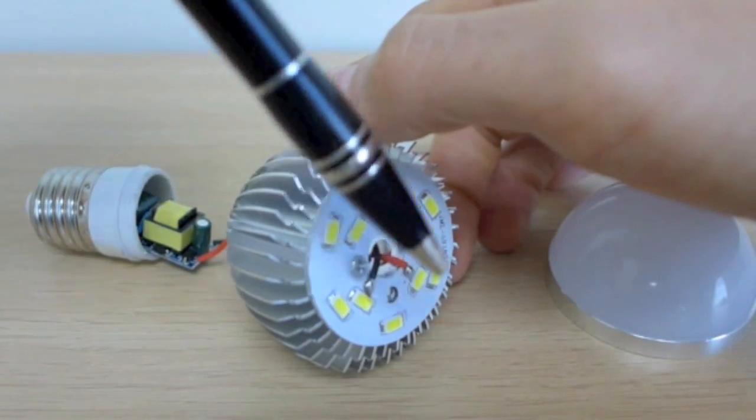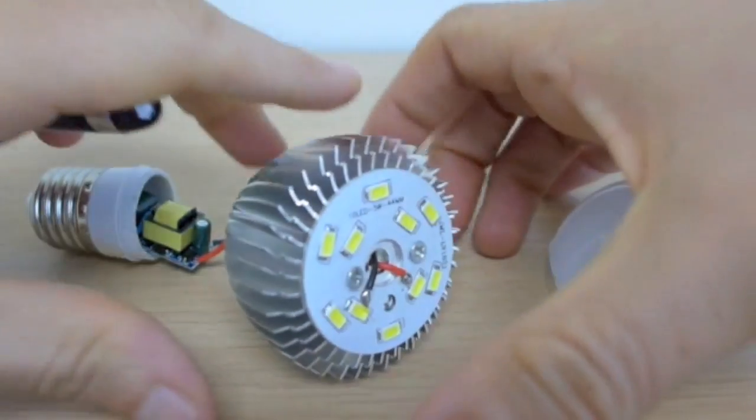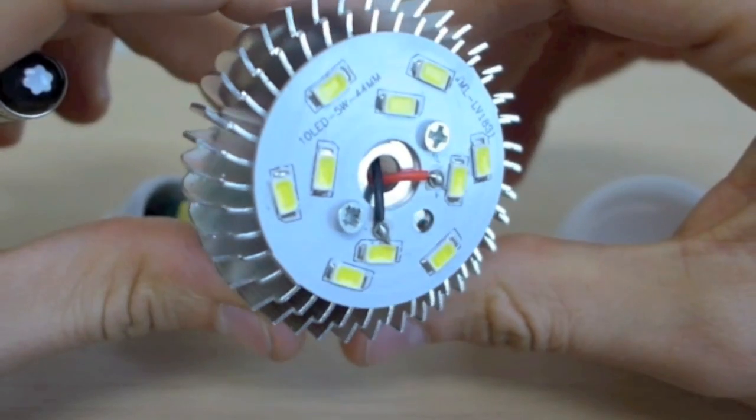This is called a PCB board, a printed circuit board, and this board wires up the LED chips and mounts them in place.